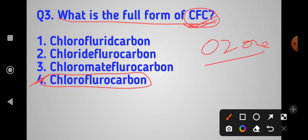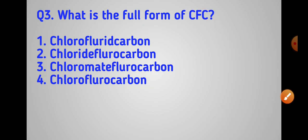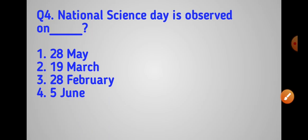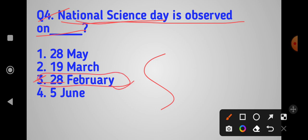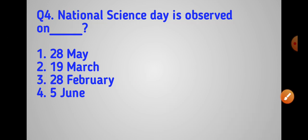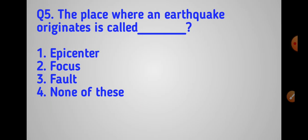National Science Day is observed on February 28th. Next question: World Environment Day is observed on June 5th.